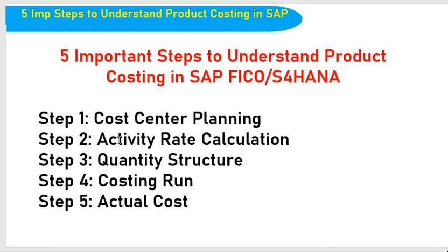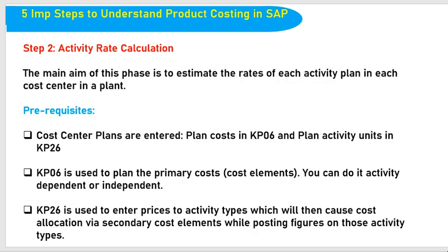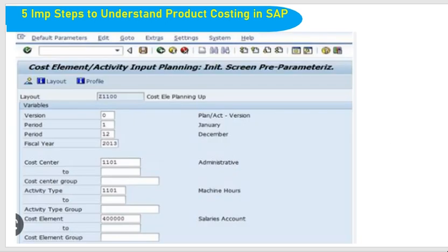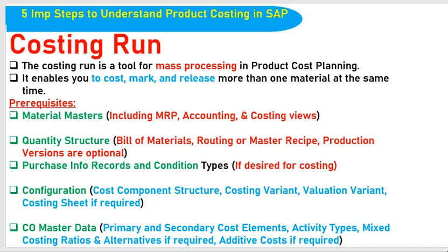So far we also explained about Cost Center Planning, Activity Rate Calculation, and Cost Component Structure. This is the 4th step — Costing Run — a very important step. What is the Costing Run? I am going to tell you today. In the last session, I clearly explained Cost Center Planning, Activity Rate Calculation, and Cost Component Structure. Today's topic is Costing Run, a very important concept in month-end activity.